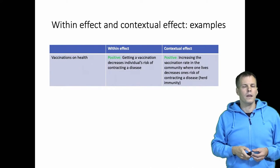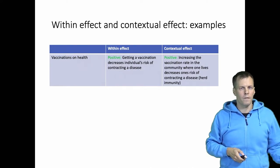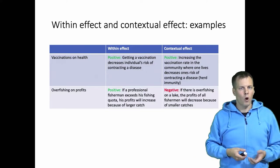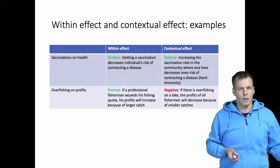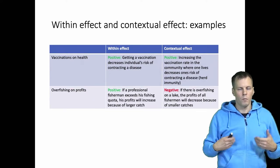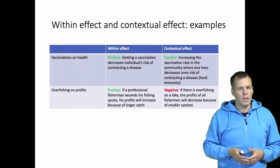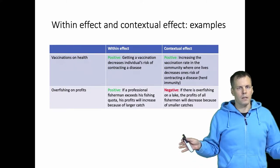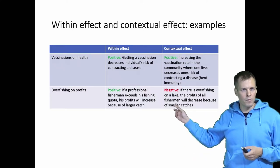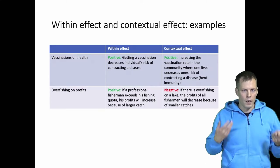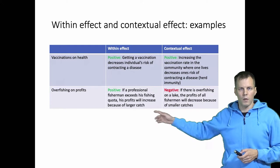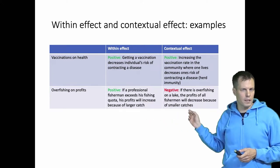We can also have examples of a positive within effect and a negative contextual effect. For example, overfishing. If an individual fisherman exceeds their quota, their profits will increase because you get more fish to sell. But if everyone else in the same lake overfishes, there is a negative effect on profits because overfishing leads to smaller catches for everyone. So the within effect is positive but the contextual effect is negative.